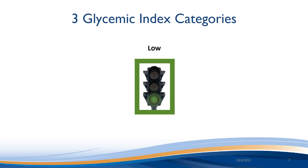There are three glycemic index categories, and we can use a traffic light analogy to help us think of these categories. Low GI foods are foods we should choose most often. They include heavy mixed grain bread, steel cut oats, barley, sweet potatoes, and winter squash.